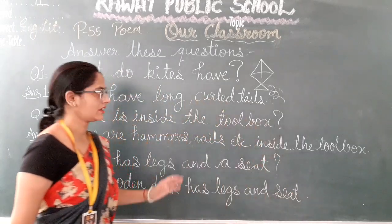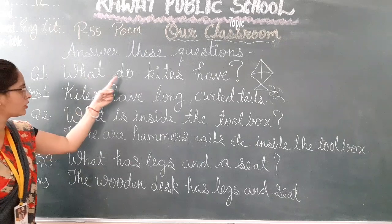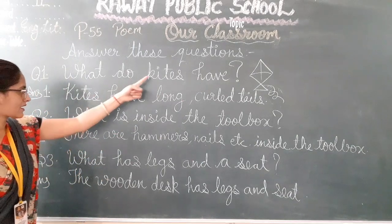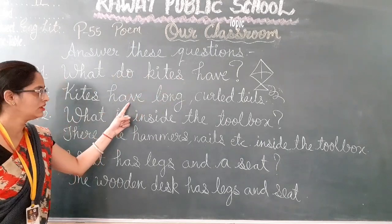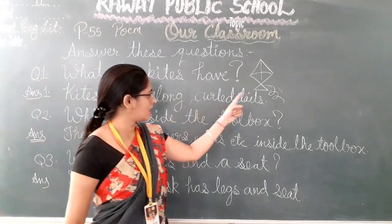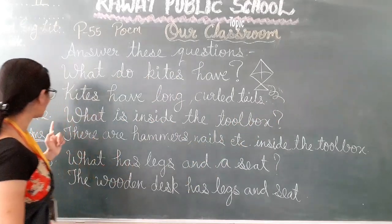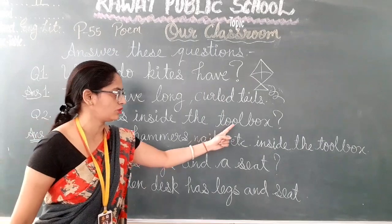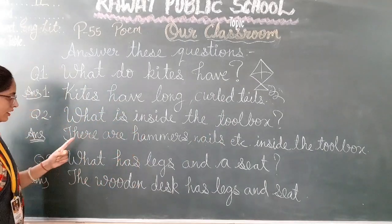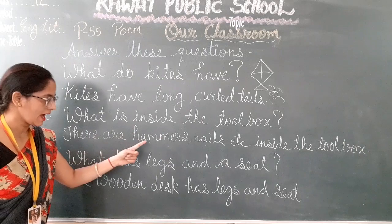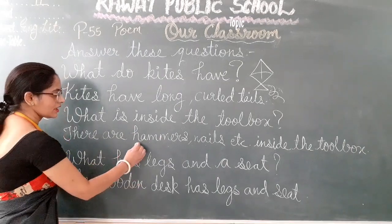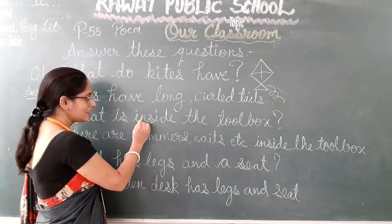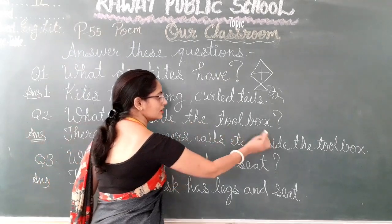Let's see again the answers. First question: what do kites have? Kites have long curled tails. Second question: what is inside the toolbox? There are hammers and nails etc. inside the toolbox.